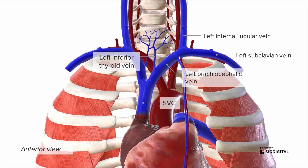And although it wasn't pictured on the right side, the brachiocephalics also tend to receive the internal thoracic or mammary veins.